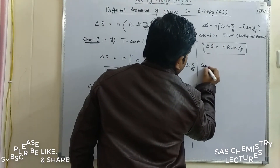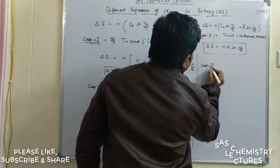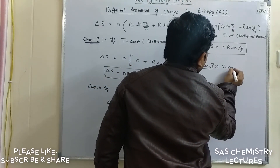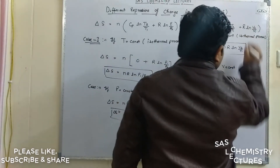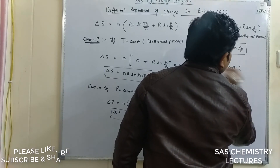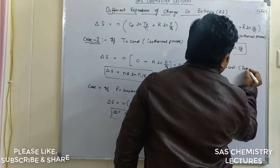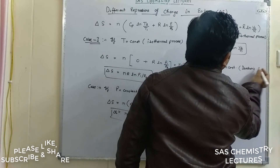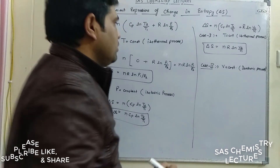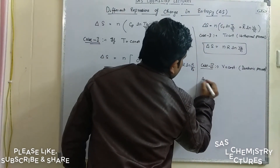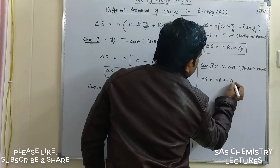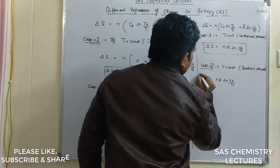Case two for the second formula: if volume is constant, the process is an isochoric process, also called an isovolumic process. Since V1 and V2 are equal, the ln(V2/V1) term becomes zero, and the formula becomes ΔS = N·Cv·ln(T2/T1).